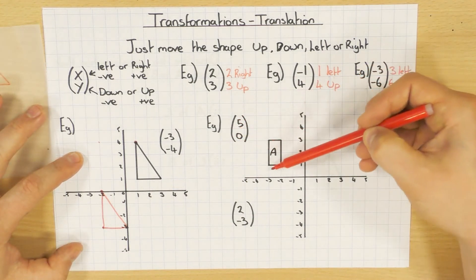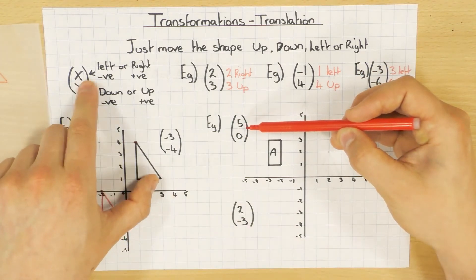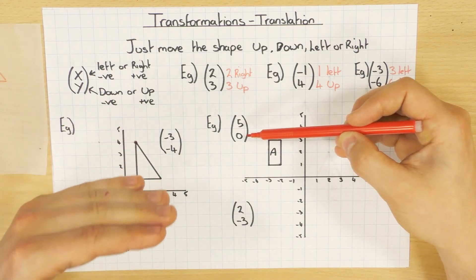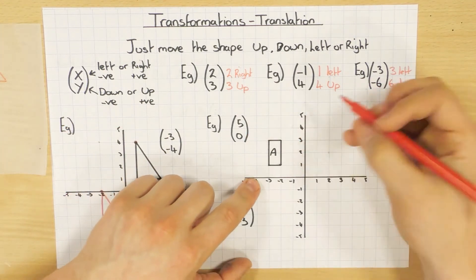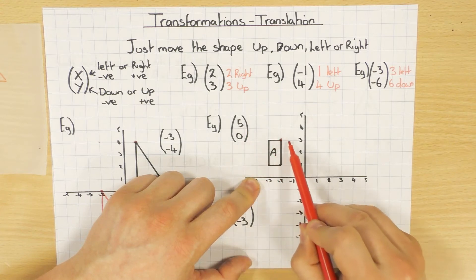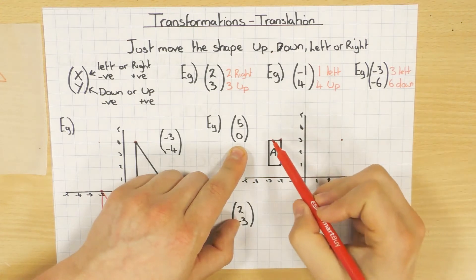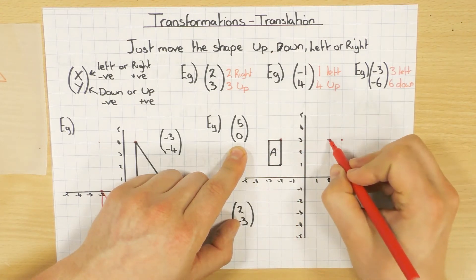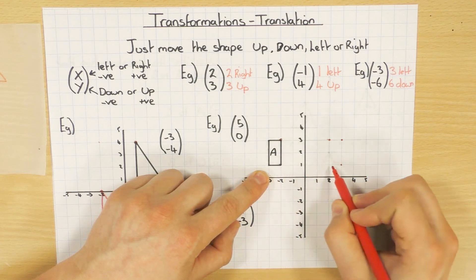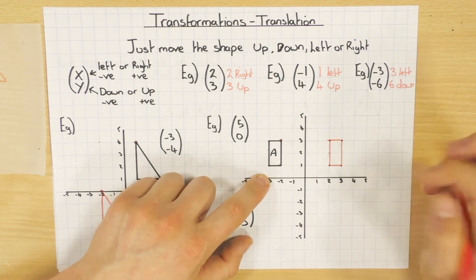Another example: here's shape A, and I'm going to translate it by the vector 5, 0. The top number is positive 5, so I go 5 to the right, and the bottom is 0, which means it does not move up or down — it stays exactly the same height. I choose each corner point and move it 5 to the right: 1, 2, 3, 4, 5 for each point. You'd use a ruler in the exam, but I'll do it freehand. This is going to be called shape B.